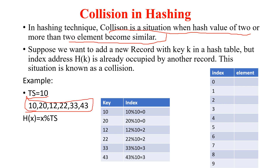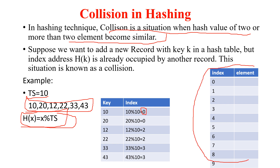So these are my given elements, and I also have a hash function. Using this hash function, if I calculate the index of 10 — that is 10 modulus 10 — I get the index 0. So what will I do? I got the index of element 10 is 0. I will check my hash table: is the 0th index free? If the 0th index is free, I will store 10 at the 0th index.